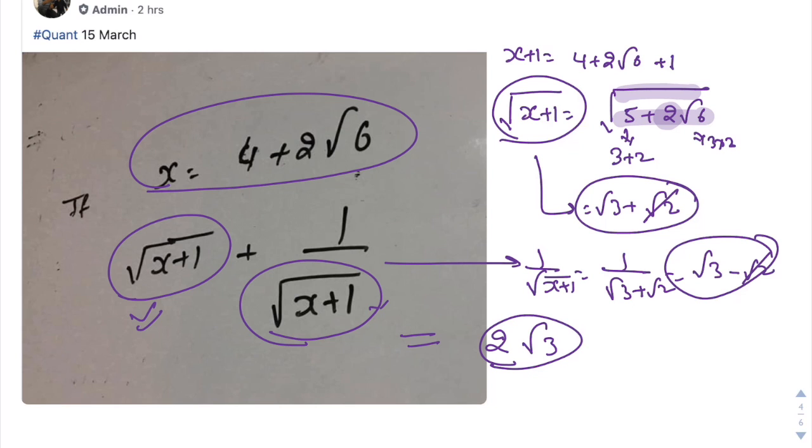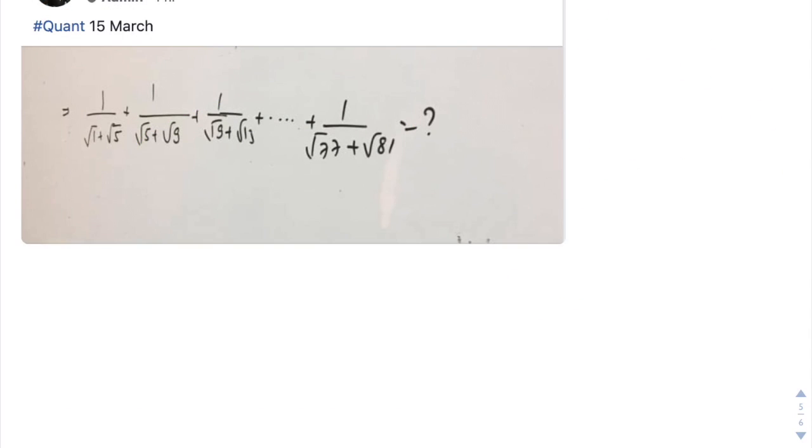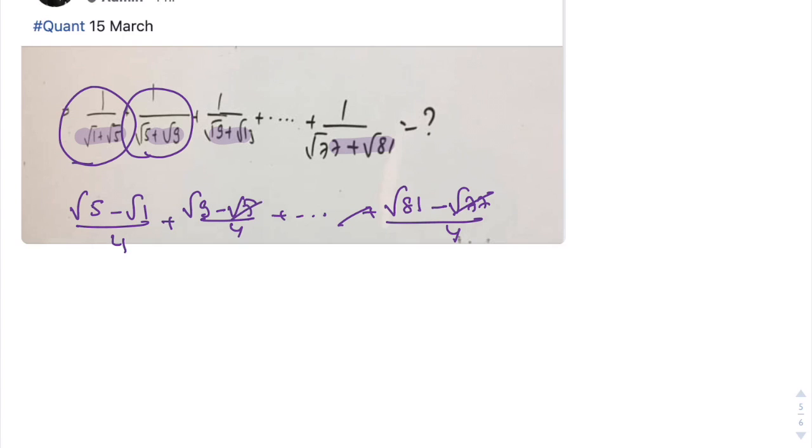Next question is a question of surds, and again a perfect rationalization question. If we rationalize the number, this one is nothing but root 5 minus root 1 divided by 4. If we rationalize this number, this one is nothing but root 9 minus root 5 by 4, up to the last term which is root 81 minus root 77 by 4. So all terms would be cancelled out. We are left with root 81, that means the last term minus the first term, divided by the difference. This holds true for AP and irrational rationalization. So this one is nothing but 9 minus 1 by 4, which is 8 by 4. So the answer of this question is 2.